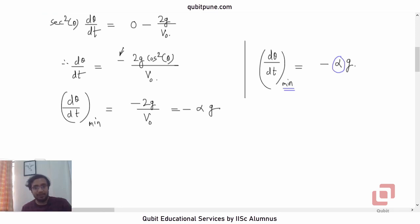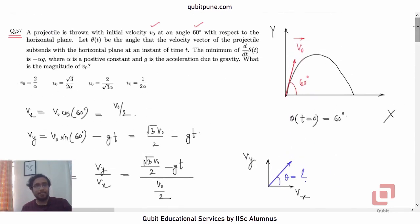So, this is actually equal to negative alpha g. If we equate the two, g will get cancelled. Even the negative sign will go. So, we will get 2 by v0 equal to alpha or v0 equal to 2 by alpha. First option.